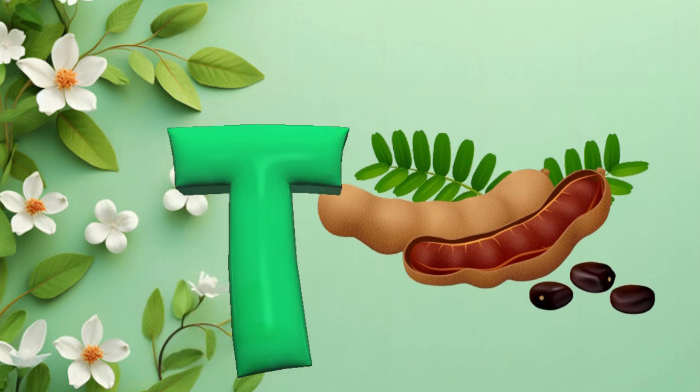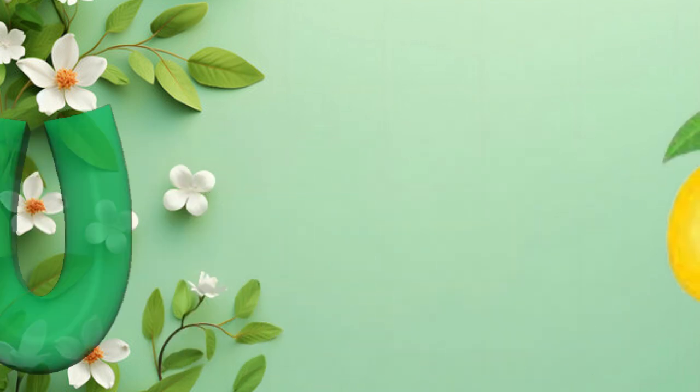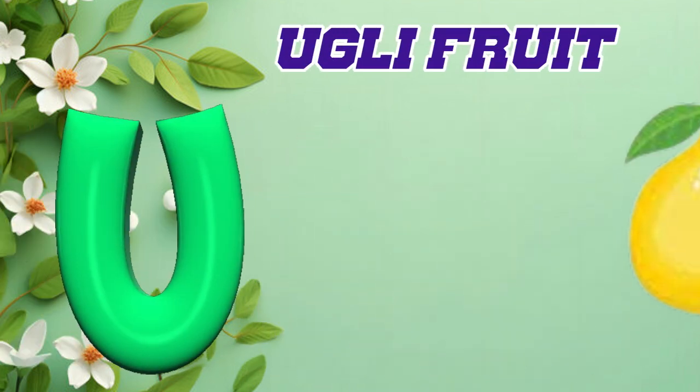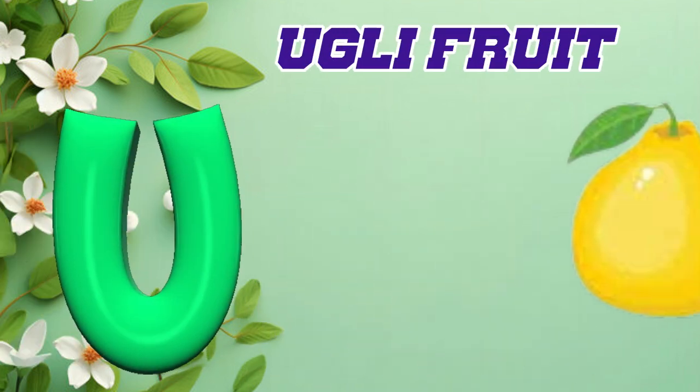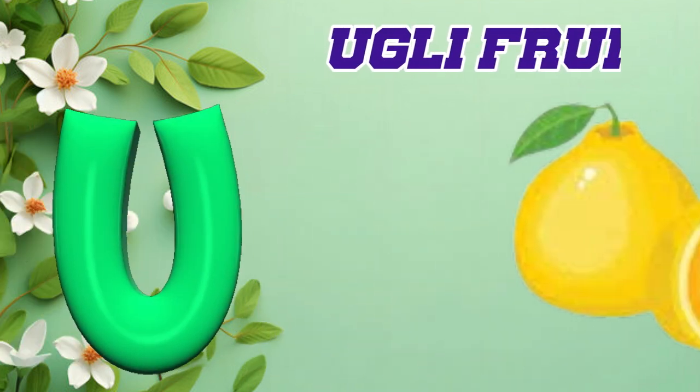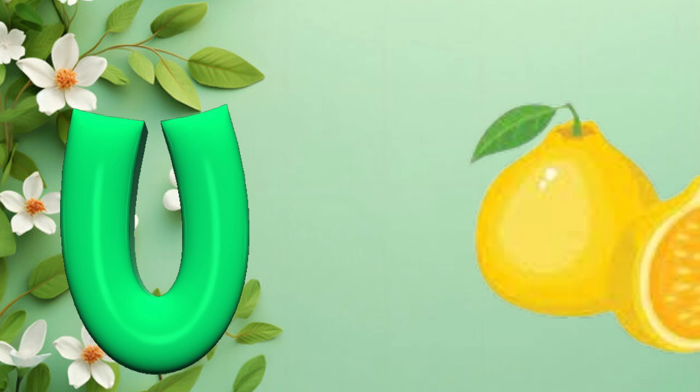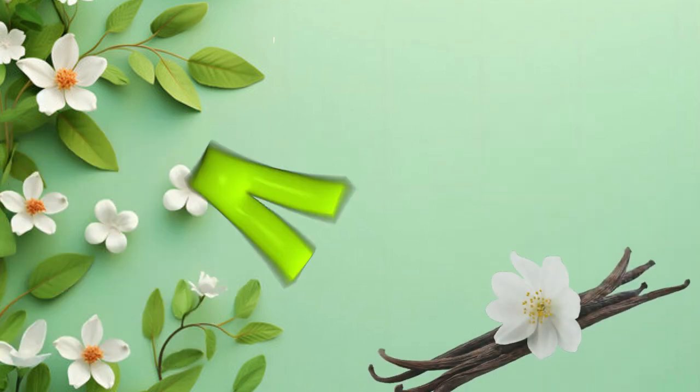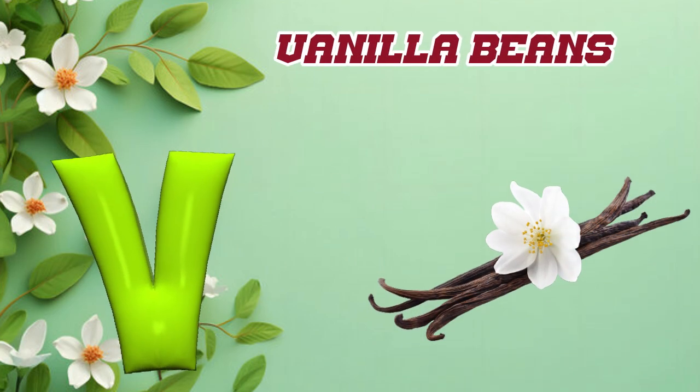U is for ugly fruit. u, u, ugly fruit. V is for vanilla beans. v, v, vanilla beans.